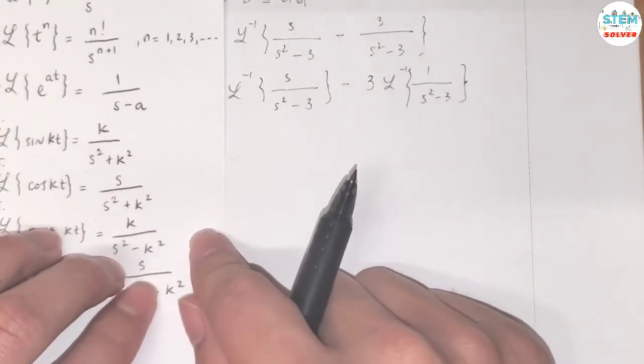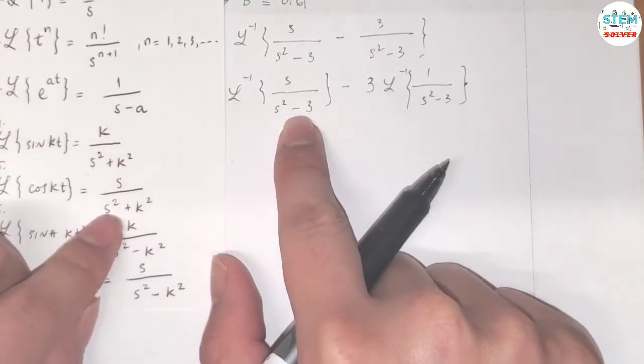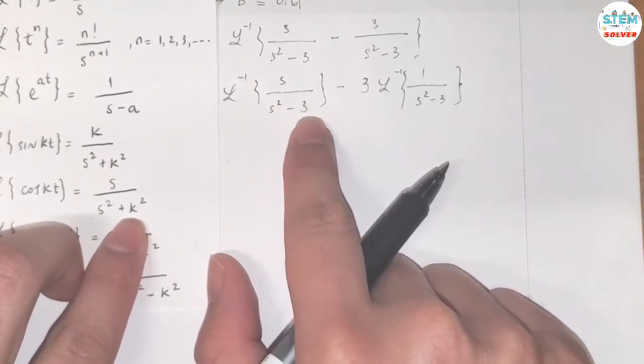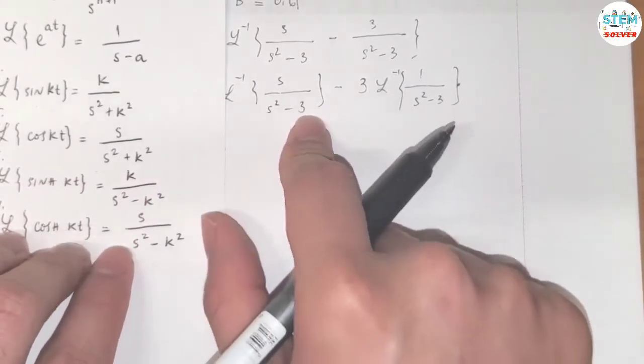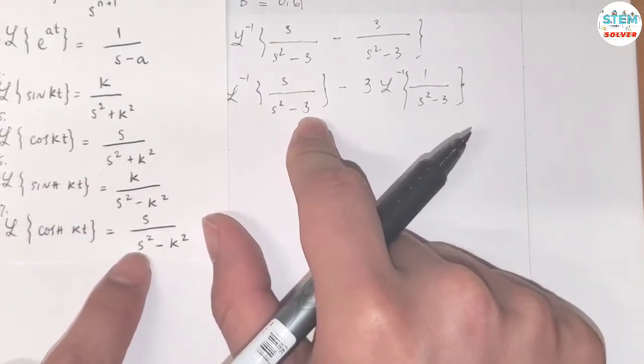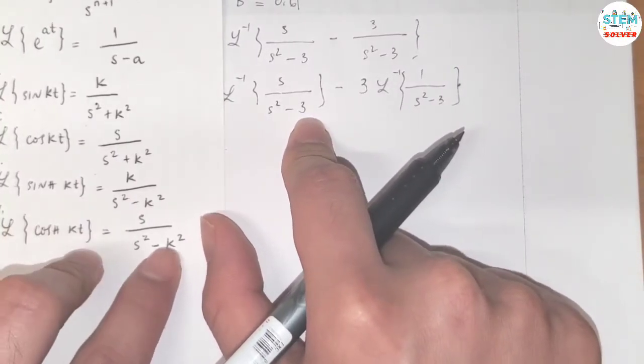Now, the formula. So this matches the formula of cosine. And in this case, L of k is square root of... No, it's not. It's actually the cosh. So it matches the cosh formula. And k is square root of 3.